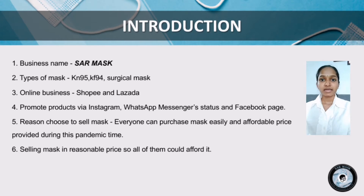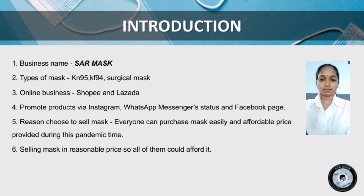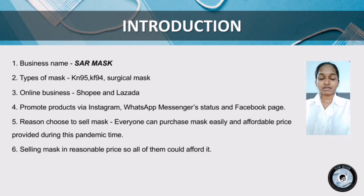My name is Renuga Devi Ravindran, metric number A21A3434. Before I start my presentation, I would like to greet my lecturer Dr. Safwan. Our business name is SAR Mask. We are selling 3 types of masks: KN95, KF94, and normal surgical masks. We started our business on online platforms Shopee and Lazada, and we also promote our products on Instagram and Facebook. The reason we chose to sell masks is because nowadays people prefer purchasing masks on online platforms. We are selling our masks at a reasonable price so everyone could afford it.